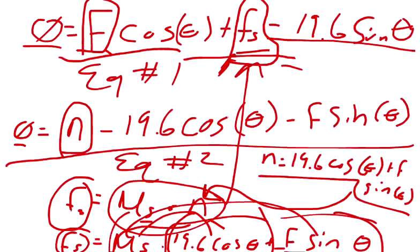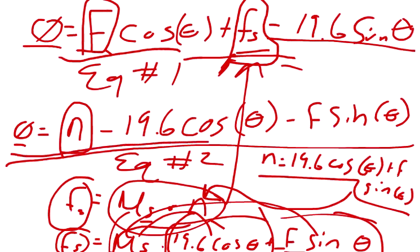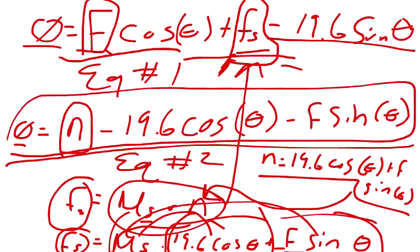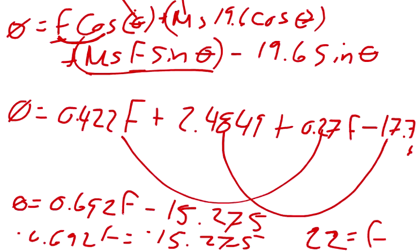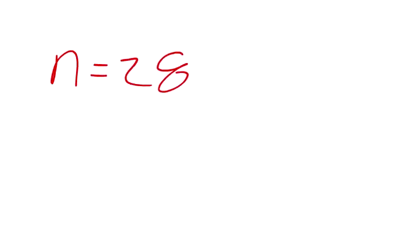That's part (a): F ≈ 22 newtons. For part (b), we already derived N = 19.6·cosθ + F·sinθ. Plugging in F = 22 and θ = 65°: N = 19.6·cos65° + 22·sin65° = 28 newtons. I halfway expect a lot of questions about this — they're welcome, so just send them down in the comments.